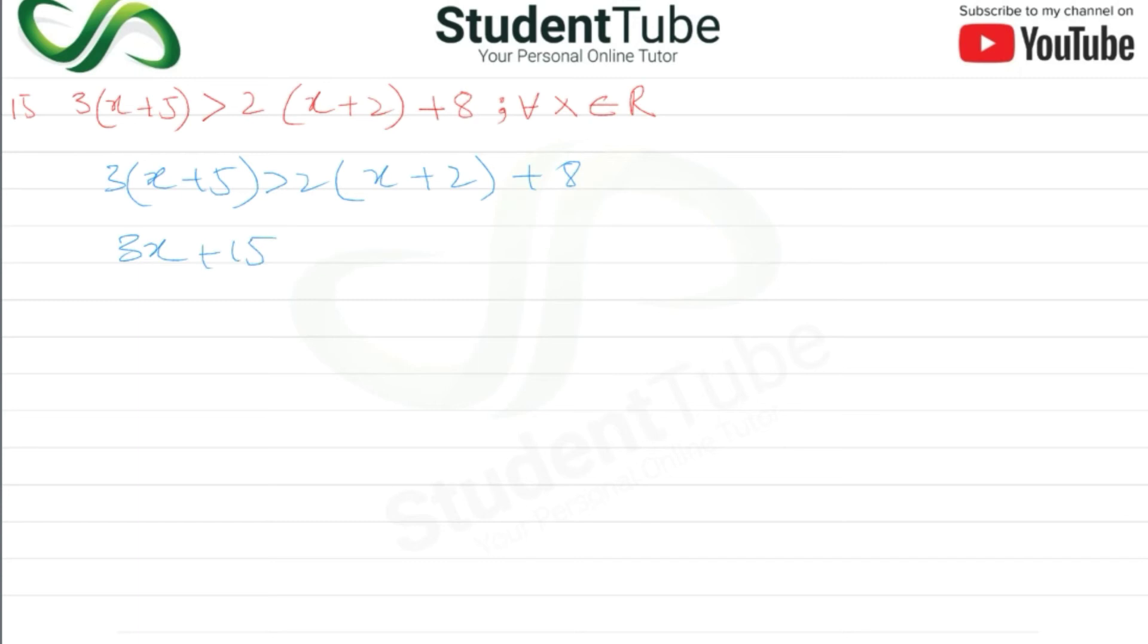So 3x plus 15 greater than 2x plus 4 and here is plus 8. Now we will do 3x minus 2x greater than 4 plus 8 and here is minus 15.